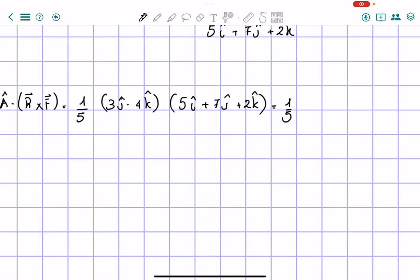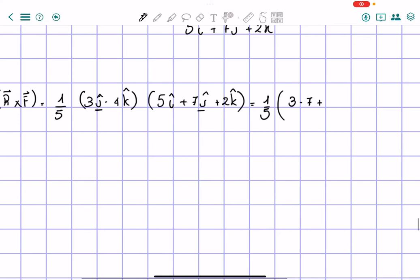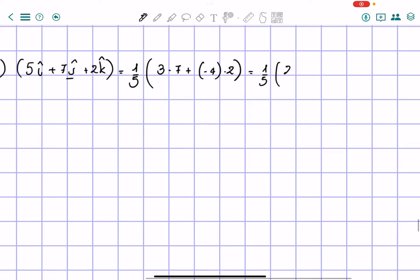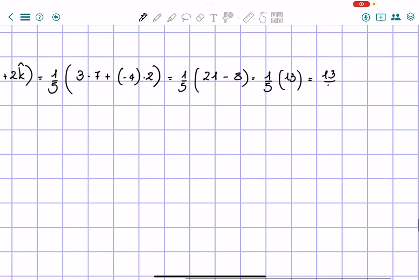So now we have, again, 1 over 5, then we multiply everything that is the same, so j multiplied by j, and since we don't have an i, the i over here is going to be 0 times 5, which is equal to 0, so we can just skip it, and then we have 3 times 7, plus negative 4 times 2. So here in the end, we have 1 over 5 times 21 minus 8. So 1 over 5 times 13, which is 13 over 5.